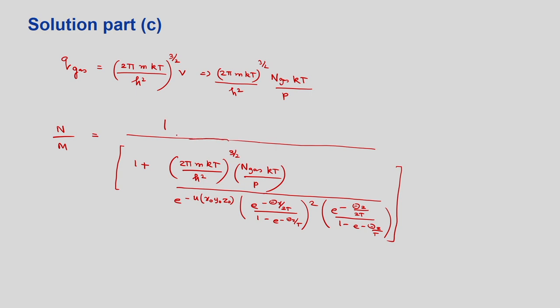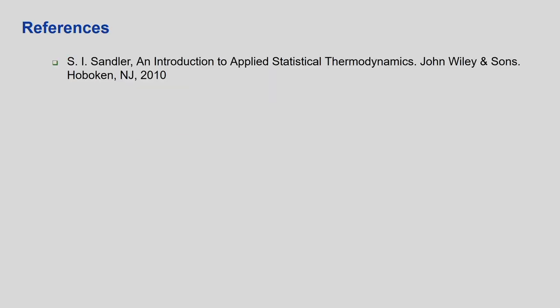This means we can calculate the fractional coverage if we know the mass of the gas molecule, the pressure, the potential of the gas atom on the crystalline surface, and the vibrational temperatures in the x, y, and z directions. With this, we can calculate the adsorption isotherm. This concludes our lecture. Please go through Sandler's book — you will find more about the Einstein model and its assumptions. In the next lecture, we will be exploring the Debye model. Thank you.